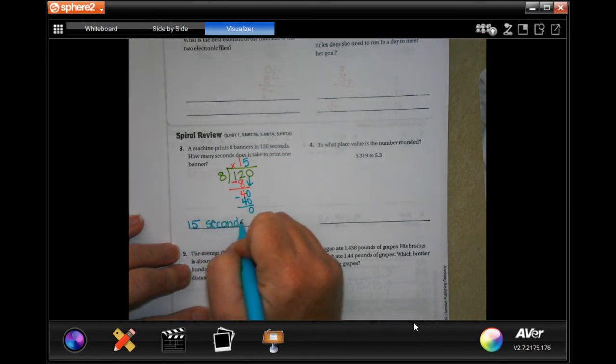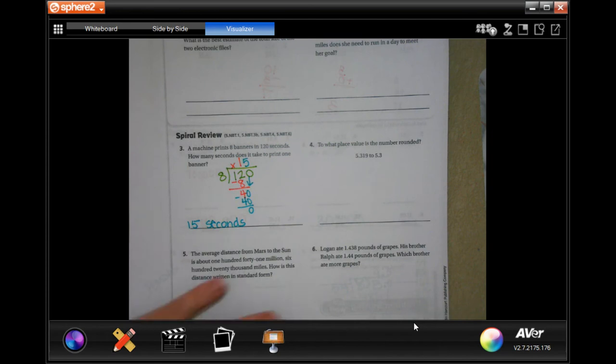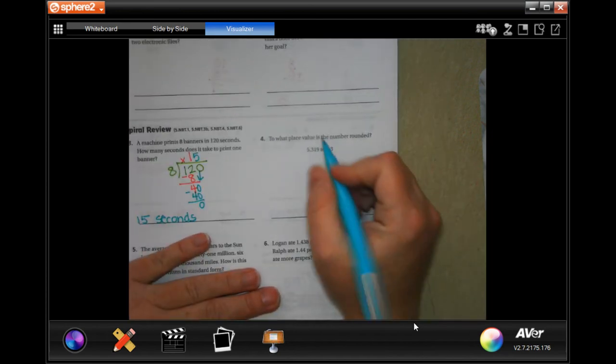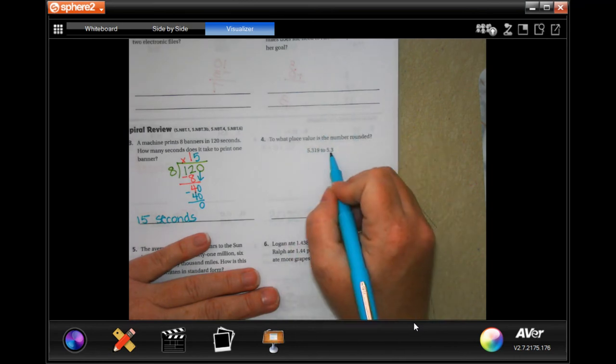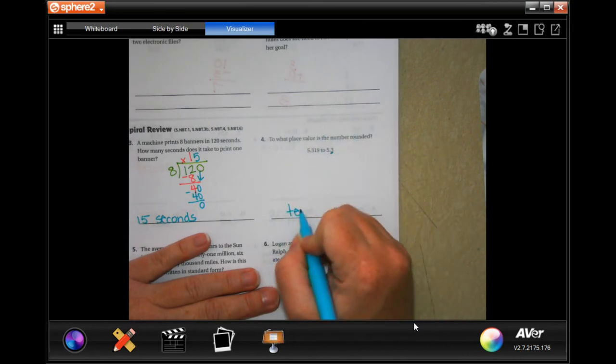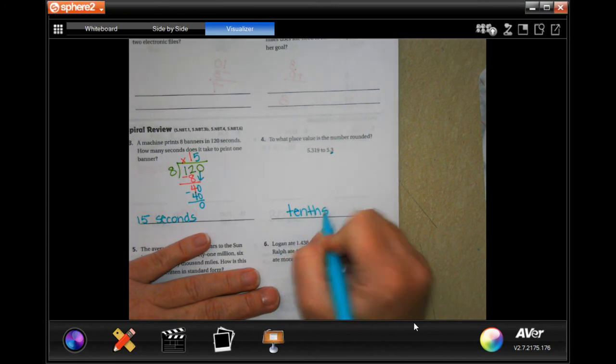Wants to know how many seconds it takes to print 1. All right. So to what place value is the number rounded? Well, that's in the 10th spot. Done.